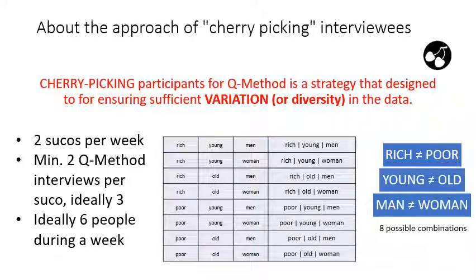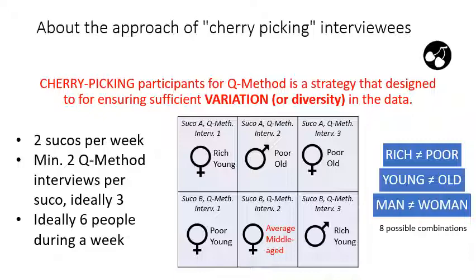Ideally you want six people. Obviously there are other criteria to consider as well, as you have seen in the previous picture with all the different people. Let's say you have six Q method interviews and you're selecting a combination of rich and poor, young and old, men and women — how can you ensure sufficient variation and that you're picking people with vulnerability who would otherwise not be selected? In a typical selection, you could end up with a middle-aged average person. But as long as your total data set is sufficiently varied with sufficient diversity, we'll be happy. But you must not force people to be interviewed.